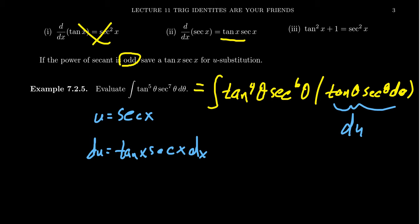What do you do with the rest of it? Secant to the sixth should be fairly clear. Secant to the sixth should just be u to the sixth. What about the tangent to the fourth? In that situation, utilizing the Pythagorean identity above here, notice that tangent squared theta is equal to secant squared theta minus one.